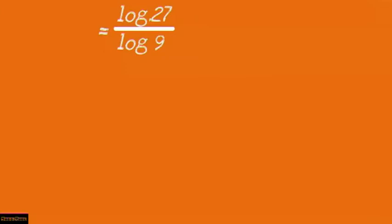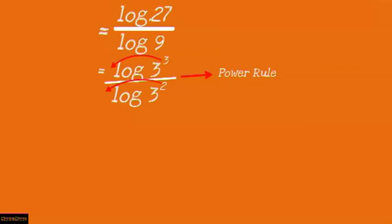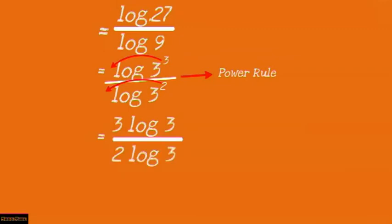The base could have been any other number, so for example it could be written as log base 3 of 27 over log base 3 of 9. We simplify further: log base 3 of (3³) over log base 3 of (3²). Applying the power rule, the 3 and 2 come to the front, giving 3 log 3 over 2 log 3. Since log 3 and log 3 are the same, they cancel out, and we arrive at the final answer of 3 over 2.